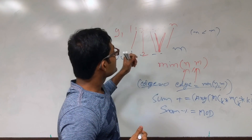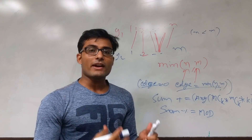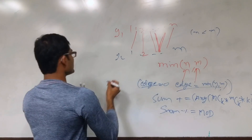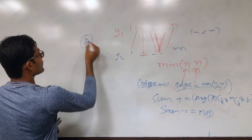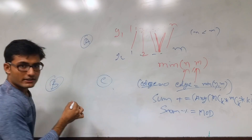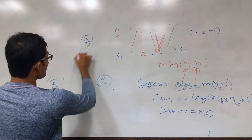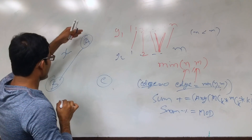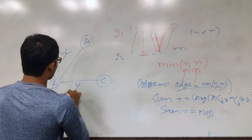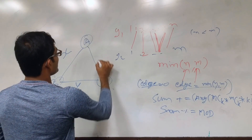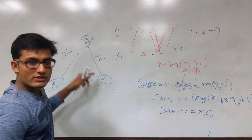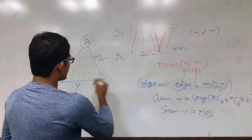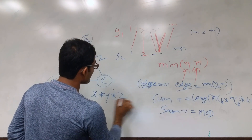Now, how do we use this to find the final answer? If you are given groups A, B, C, you compute X = possible graphs between A and B, Y = possible graphs between B and C, and Z = possible graphs between A and C. The total number of valid graphs is simply X × Y × Z.